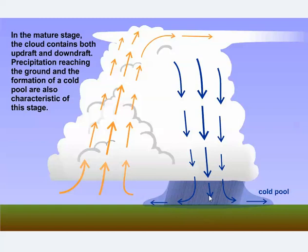In the mature stage, the storm cloud contains both prominent updrafts and downdrafts. When the downdraft splashes down on the ground, it spreads out laterally, much like water from a kitchen faucet hitting the sink below.